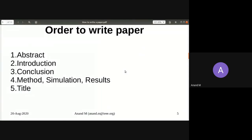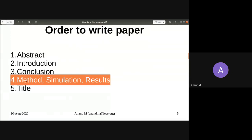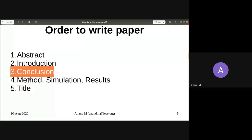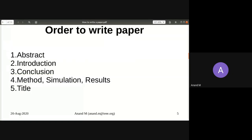The order to write is not straightforward. The title comes last because it requires a lot of thought — it's the catching thing, like a movie title. You start with the abstract, then the introduction, then go directly to the conclusion. The method, simulation, and results are the last things to write, not the first. So the writing order is: abstract, introduction, conclusion, then method, simulation, results, and finally the title. This order must be followed strictly.